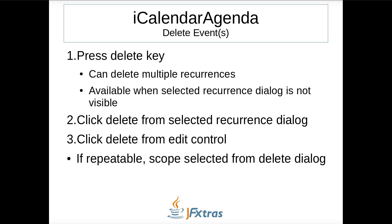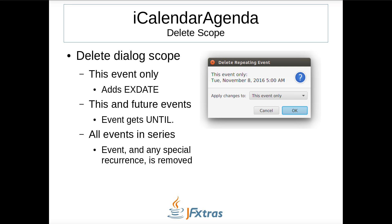Events can be deleted in three ways: by selecting them and pressing the delete key; by clicking delete from the selected recurrence dialog; or by clicking delete from the edit pop-up. If the event is repeatable, a dialog prompts the user to specify the scope of the deletion. The scope dialog offers three options: this event only, which adds an EXDATE property; this and future events, which adds an until element to the RRule; and all events in the series, which entirely removes the event from the VCalendar.